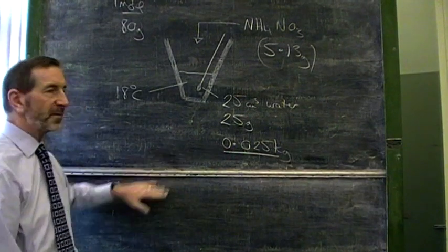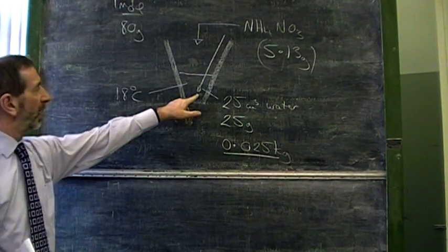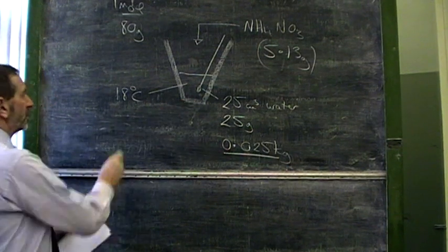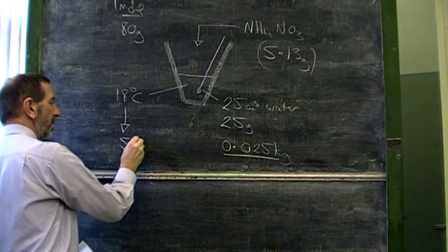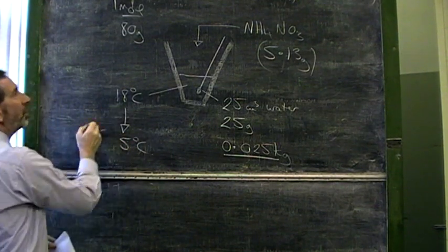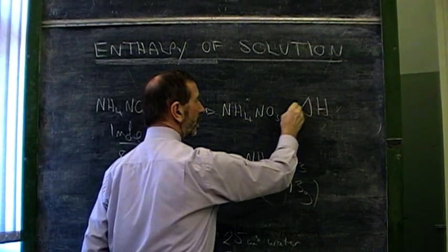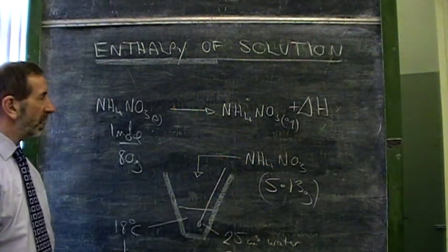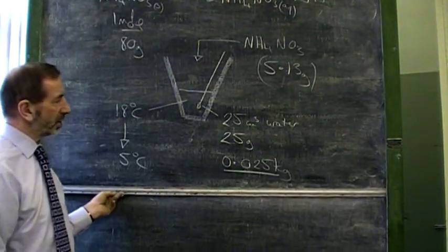And here's what they found. They found that when they added the ammonium nitrate and stirred the water, the temperature fell. Well, that's a surprise. That means that this must be an endothermic reaction. When ammonium nitrate dissolves in water, it doesn't give out heat, it takes away heat.